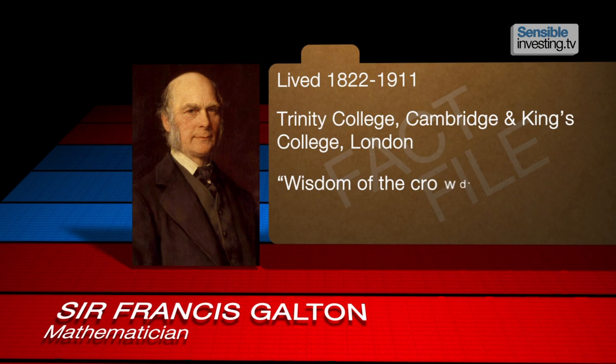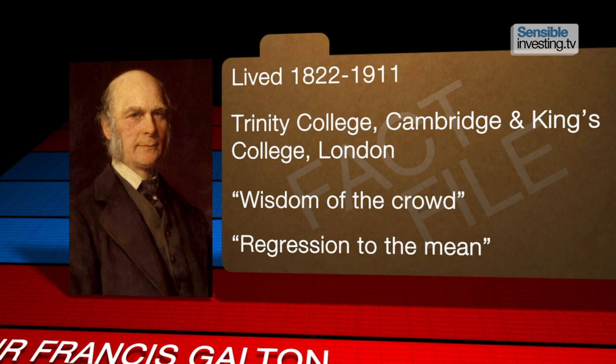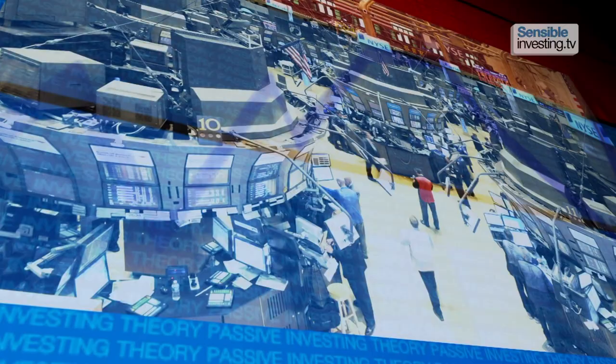His name was Sir Francis Galton, and the discovery in question is the wisdom of the crowd — the way in which the view of a group of people is generally more accurate than the view of an individual group member. Related to it is regression to the mean, the tendency of distributions to collect around the mean or average point. Proponents of passive investing say both phenomena are observed in global stock markets.